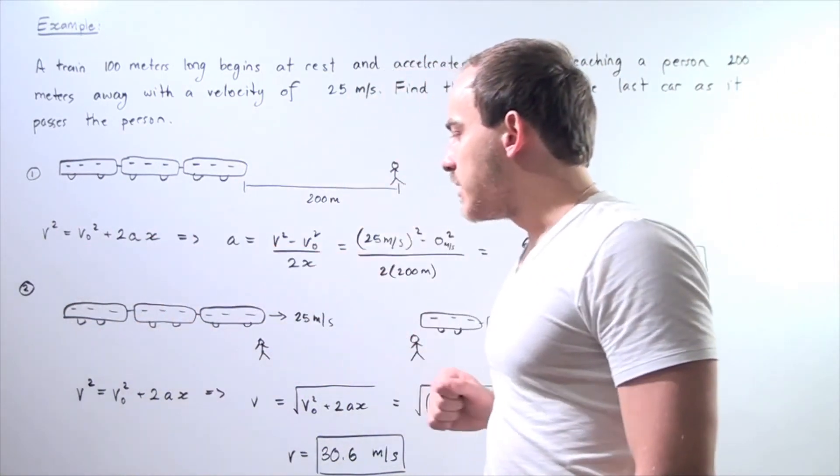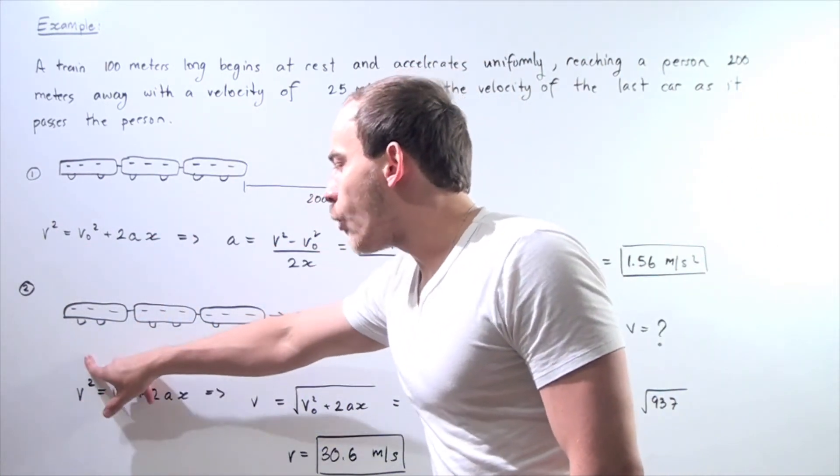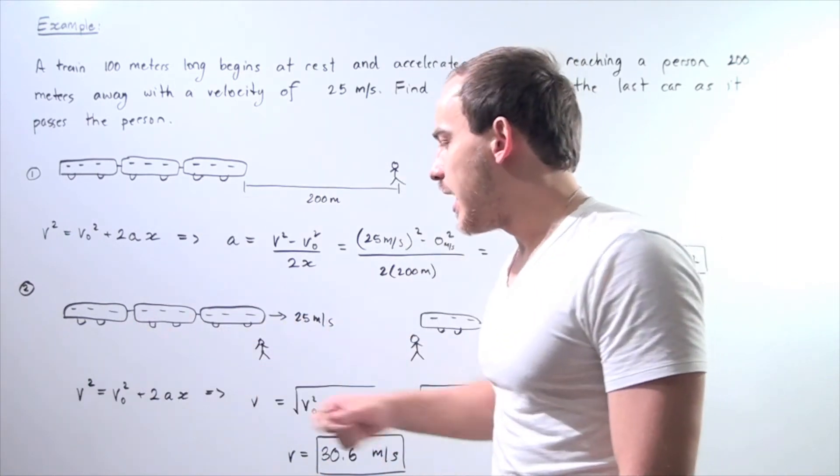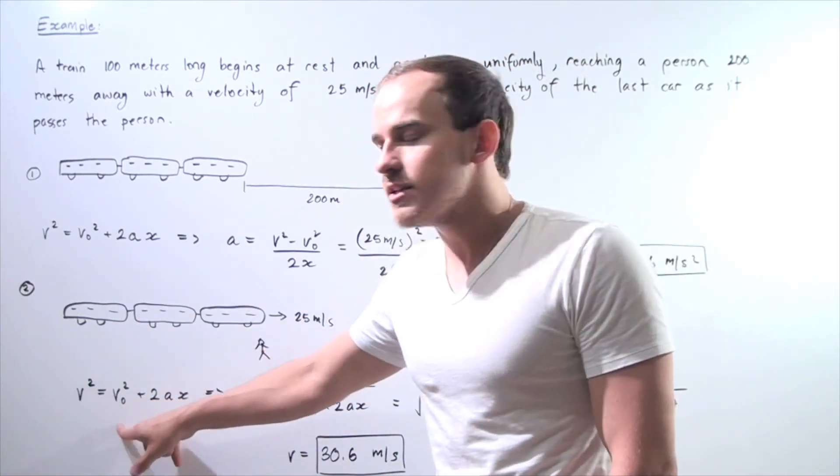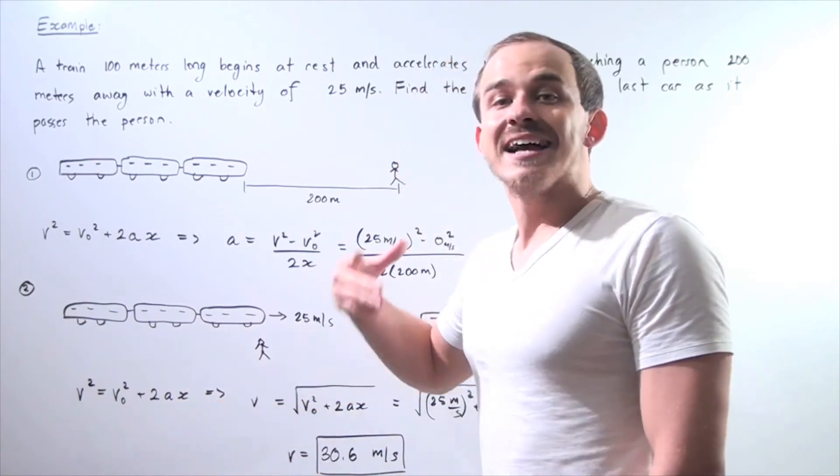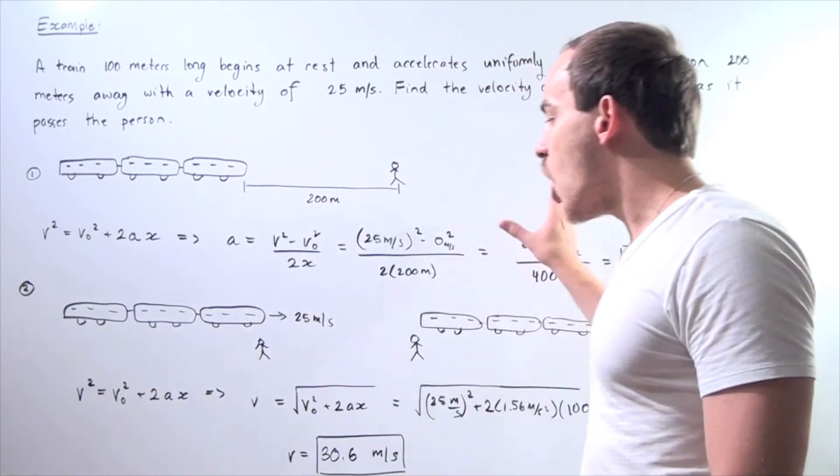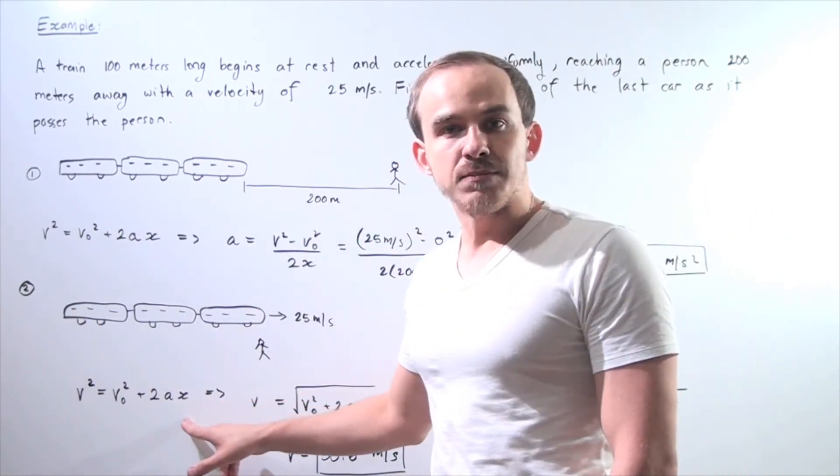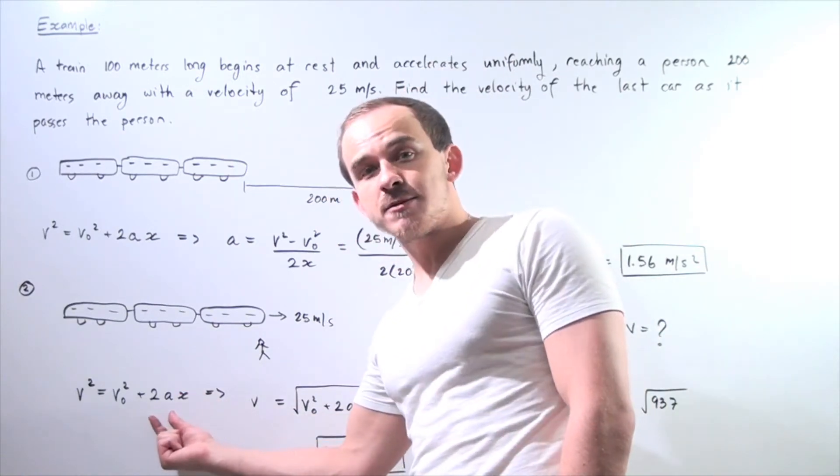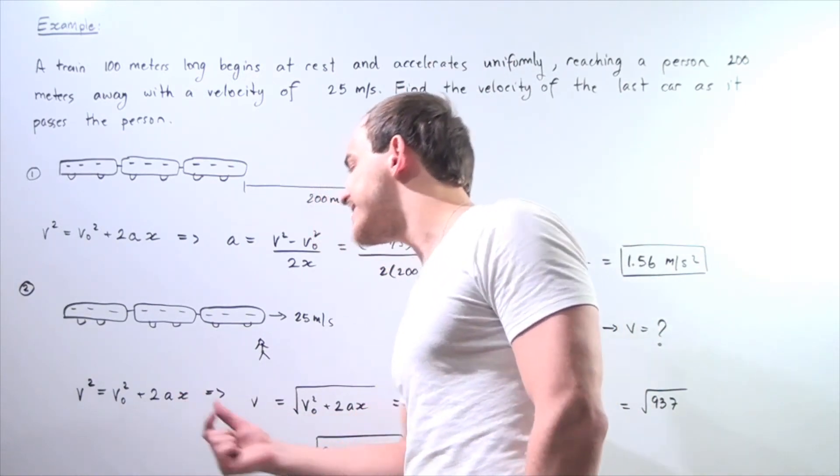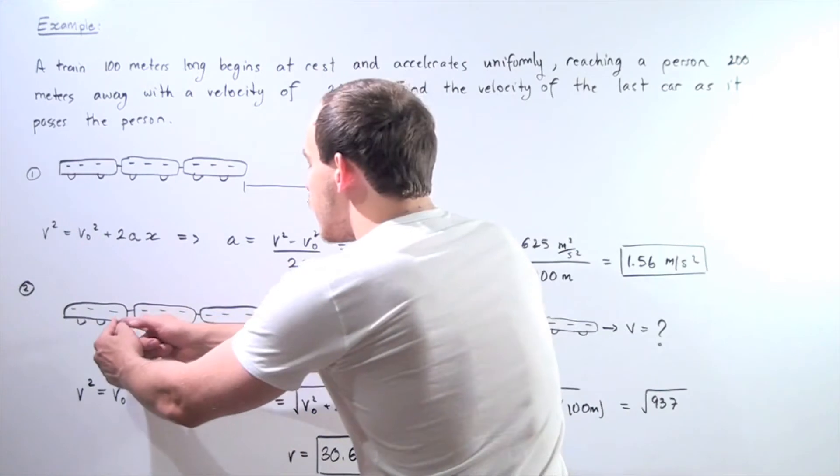Now, let's use the same exact formula. So final velocity squared which is what we want to find equals initial velocity squared plus 2 times our acceleration which we now know times our displacement. So what is our displacement?